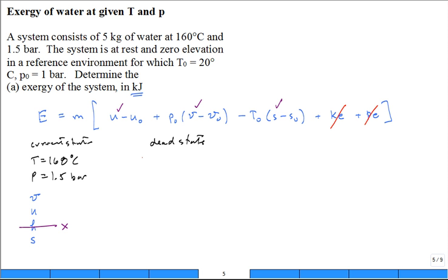Likewise for the dead state. Just come over here. T naught, 20 degrees C. P naught, 1 bar. And it's a challenge. The challenge is, can I get V naught? Can I get U naught? And can I get S naught? Because I need them.